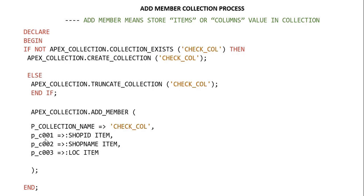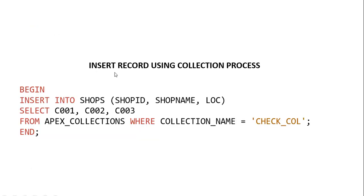The table columns are shop_id, shop_name, and location. We use these three columns for storing item values in the collection: C001 stores the shop_id item, C002 stores the shop_name item, and C003 stores the location item.